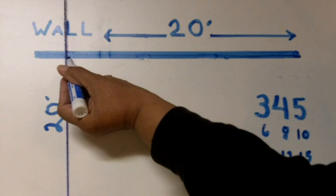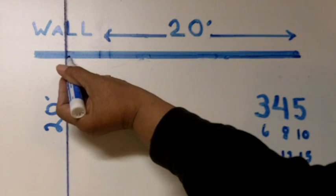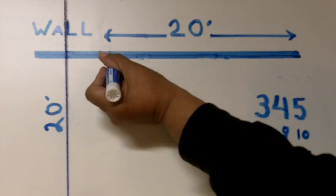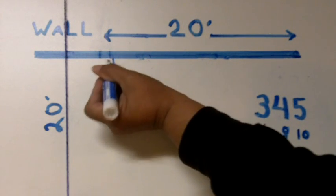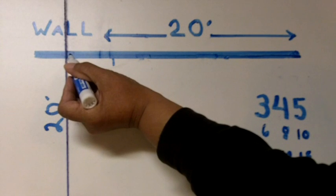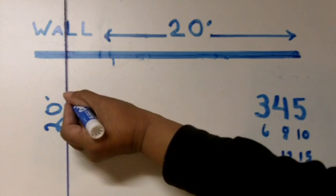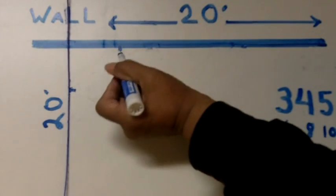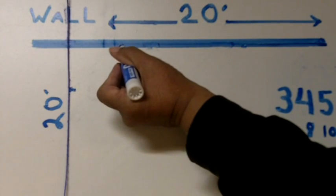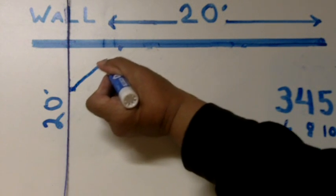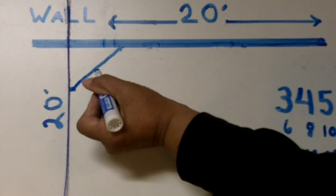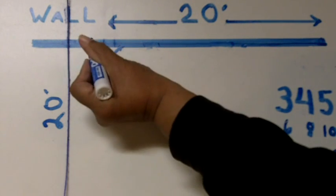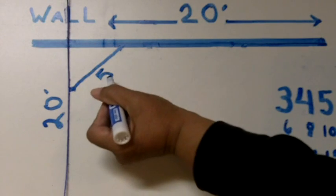And so what you would do is you would measure out from the corner 3 feet. So this hash mark will represent 3 feet. And then you would measure out from the corner and down your chalk line 4 feet. And this hash mark here will represent 4 feet. So now what you do is you take your tape measure from one hash mark to the other hash mark, and the distance should read 5 feet. 3, 4, 5.